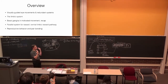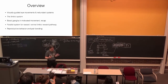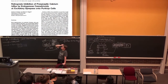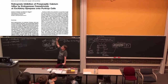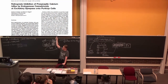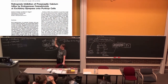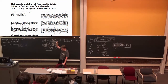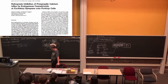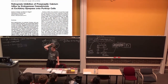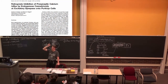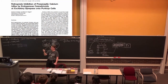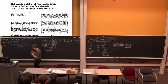Even though cannabinoid receptors are present in the cerebellum, long-term depression there depends on metabotropic glutamate receptors, not cannabinoids. Those of you who have taken cellular neuroscience can refer back to that, and I'm happy to talk about some of the details as well.